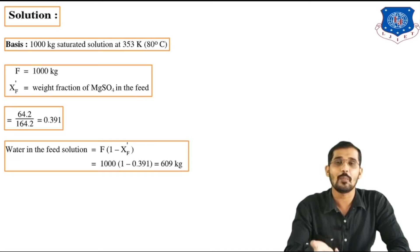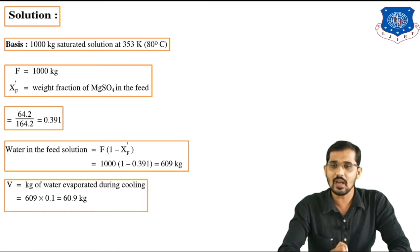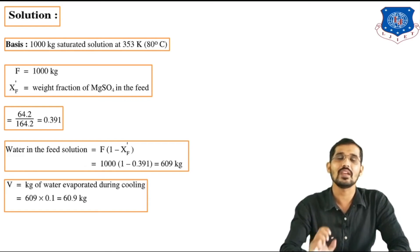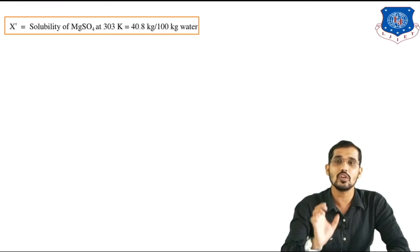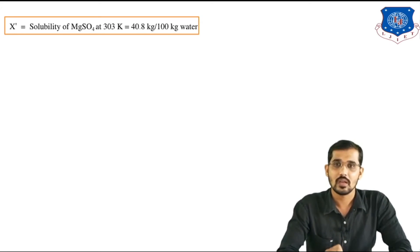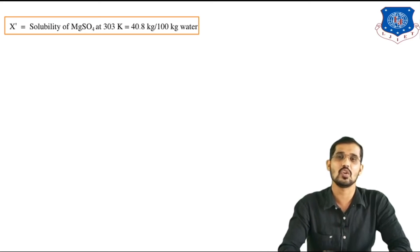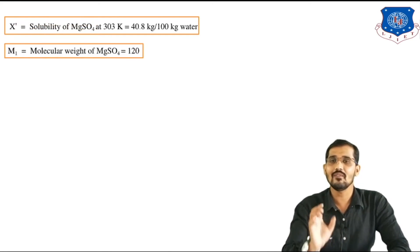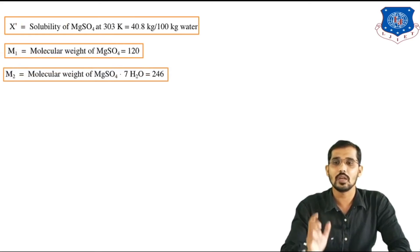Water evaporated during crystallization: V = 609 × 0.1 = 60.9 kg. X' (solubility of MgSO4 at 303 K) = 40.8/100 kg of water. M1 (molecular weight of anhydrous MgSO4) = 120. M2 (molecular weight of MgSO4·7H2O) = 246.